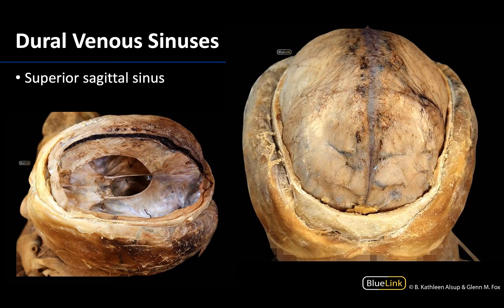Starting with the longest and one of the most prominent will be your superior sagittal sinus, and you can see it visible here through the dura in this anterior superior view. You can see some of those arachnoid granulations associated with the lacunae of the superior sagittal sinus as well, quite prominent in this particular image.